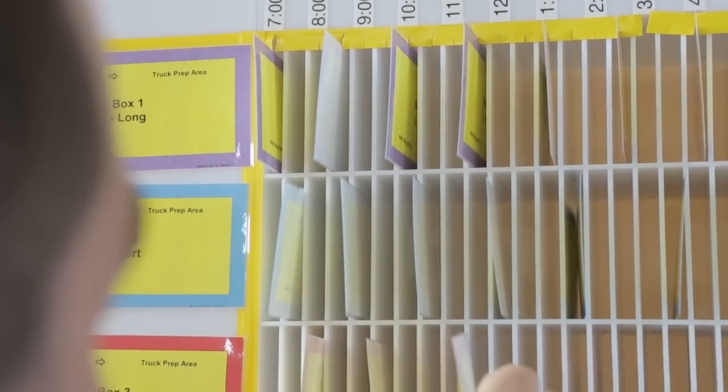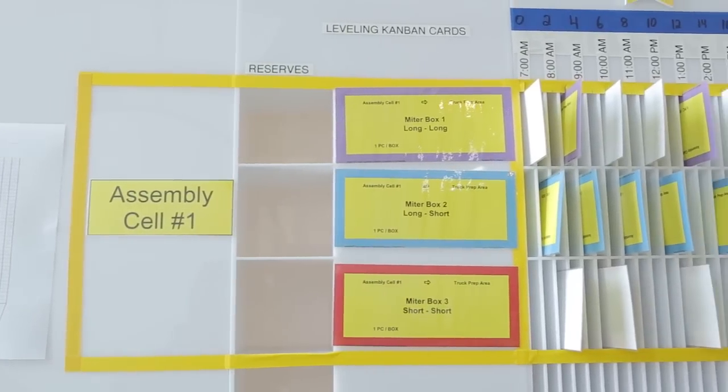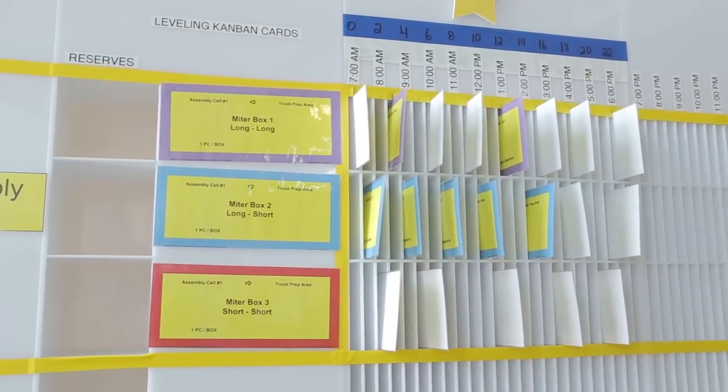For example, a particular part has an average daily demand of 8. Kanban cards for that part are spread evenly across the shift. The material handler will know to pick up one part per hour from the workstation.